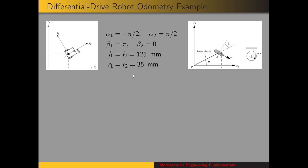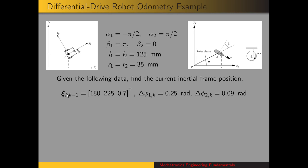Here's an example. We have a robot with two wheels, and here are the values for alpha and beta which locate those wheels, resulting in the configuration shown where the wheels are on the y-axis and roll in the x direction. For this robot, the dimension L is 125 millimeters and the wheel radii are 35 millimeters. We want to perform odometry given the robot inertial frame position at the previous time step: 180 millimeters in x, 225 in y, and an angle theta of 0.7 radians. The measured wheel displacements are: wheel one turned 0.25 radians and wheel two turned 0.09 radians. We want to find the current position in the inertial frame.